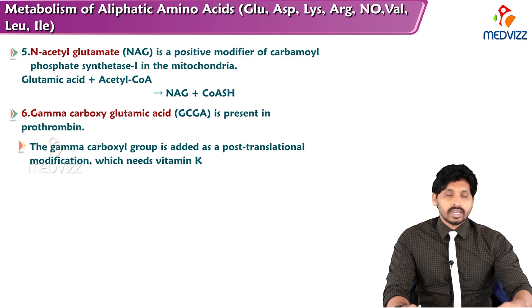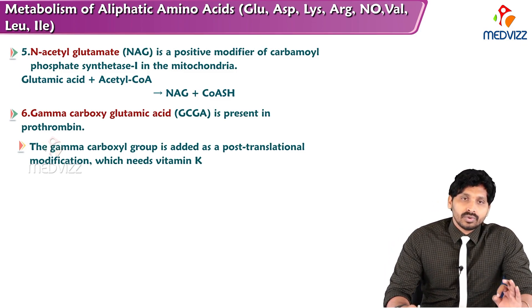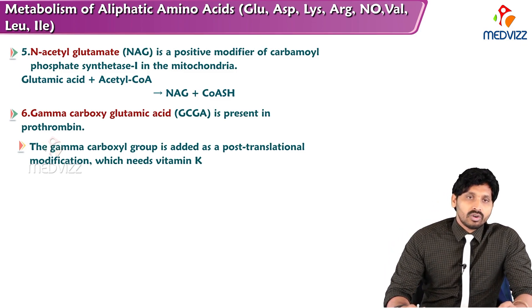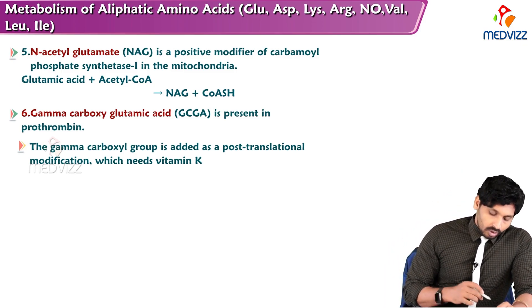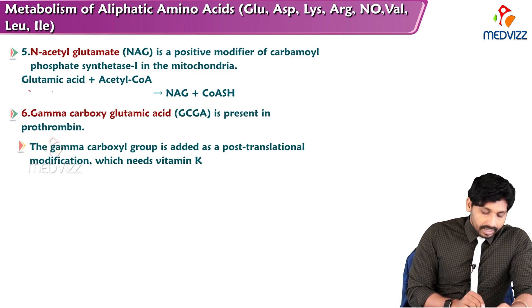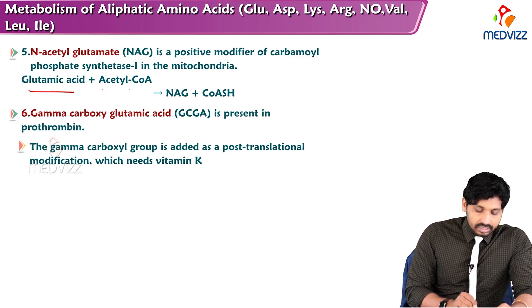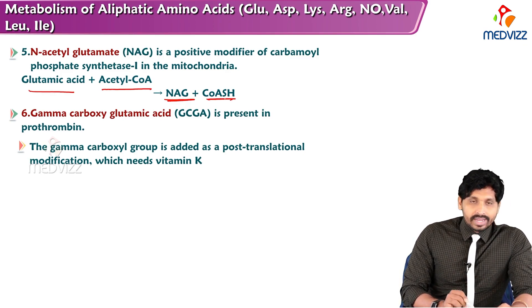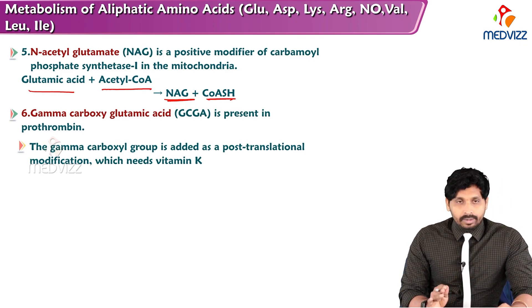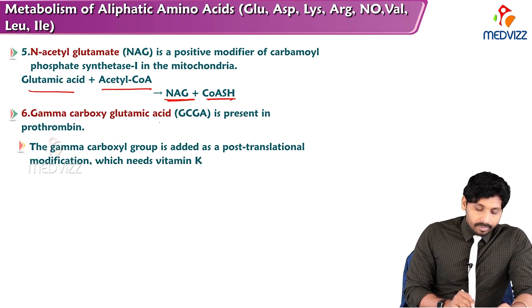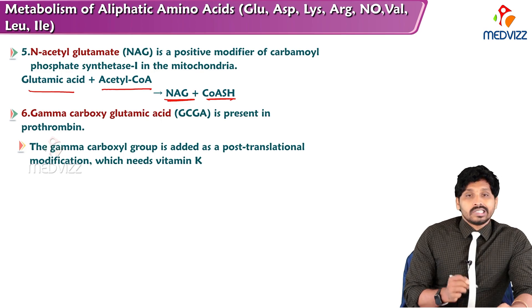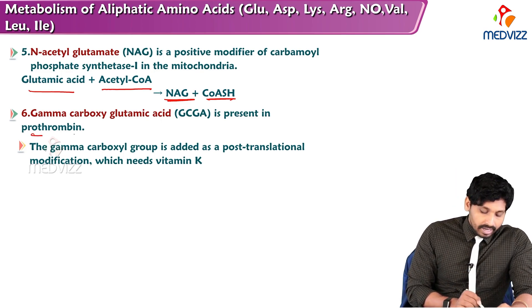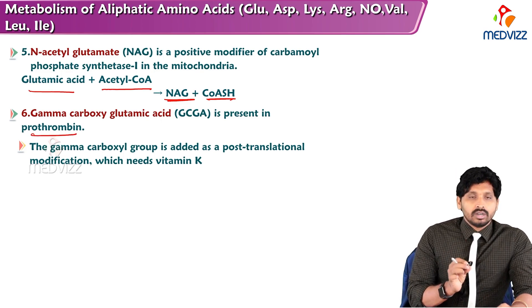N-acetyl glutamate acts as a positive modifier in the first reaction of the urea cycle in mitochondria. It is formed when glutamic acid reacts with acetyl-CoA to add an acetyl group to glutamic acid, releasing CoA-SH. Gamma carboxyglutamic acid (GCA) is also a derivative of glutamic acid.